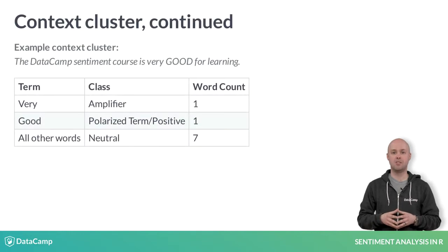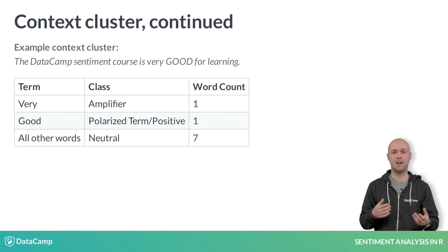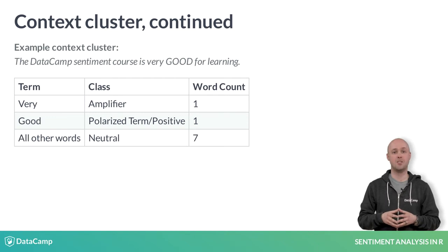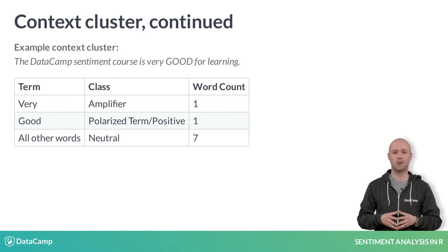Each of the individual words is classified as polarized, neutral, negator, amplifier, or de-amplifier. The identified words from the lexicon are the polarized words — in this case, 'good'. A neutral word has no impact on the context cluster's polarity, but does affect the word count, which is important later. In this cluster, there are seven neutral terms like 'learning' and stop words.